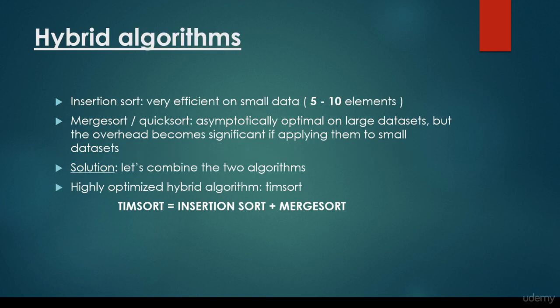Then we have been talking about insertion sort. Insertion sort is very efficient on small datasets, 10 to 20 items, but especially efficient when we have 5 to 10 items or elements. So merge sort and quick sort on the other hand, asymptotically optimal on large datasets, but the overhead becomes significant if applying them to small datasets.